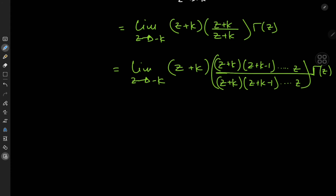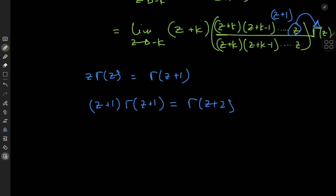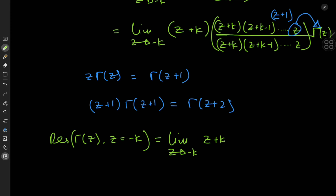We know the properties of the gamma function: z·Γ(z) = Γ(z + 1). So the z factor absorbs into the gamma function to give Γ(z + 1). But we also have a (z + 1) factor in the numerator, and (z + 1)·Γ(z + 1) = Γ(z + 2). We keep absorbing terms from the numerator into the gamma function, finally giving us Γ(z + k + 1) once we reach the final (z + k) term.